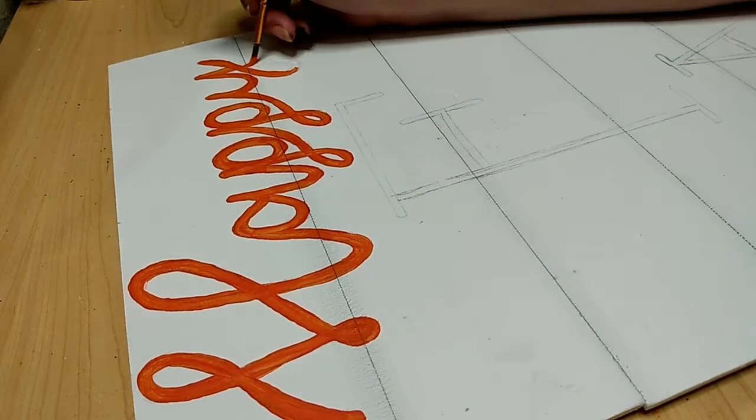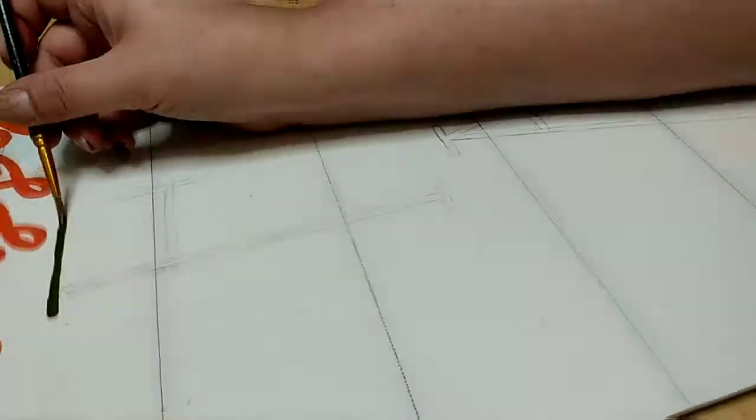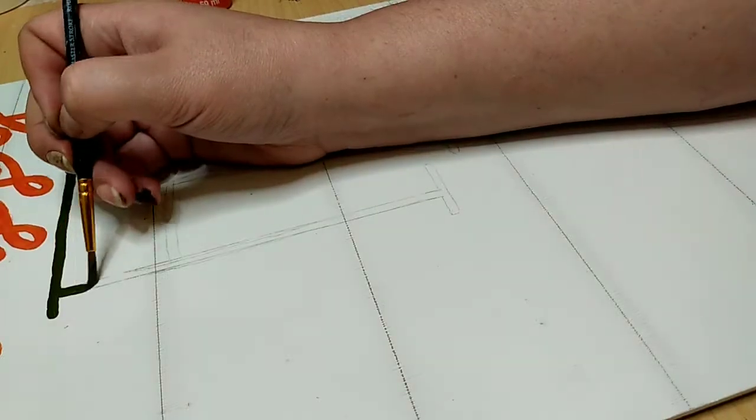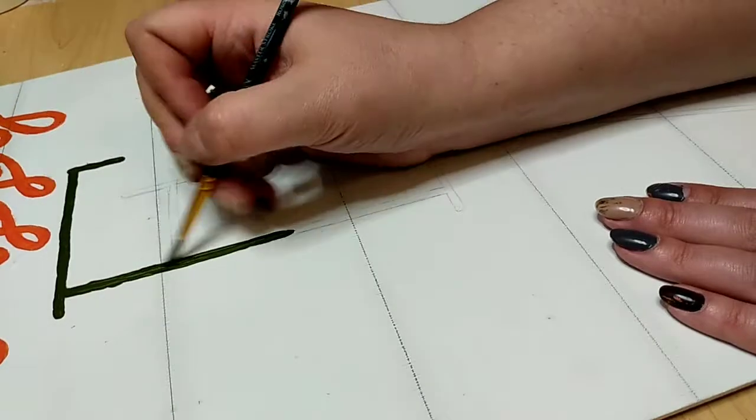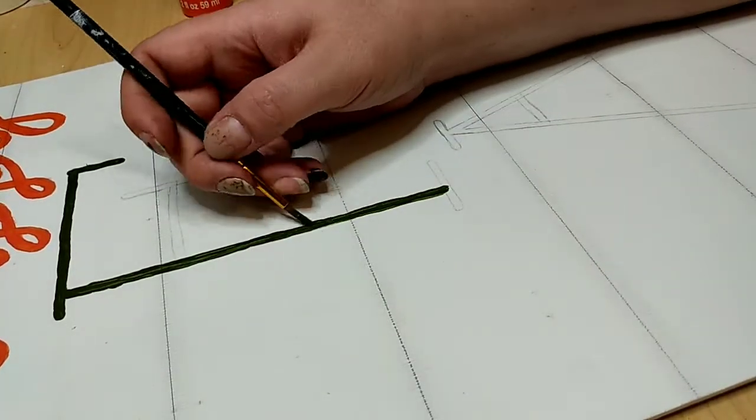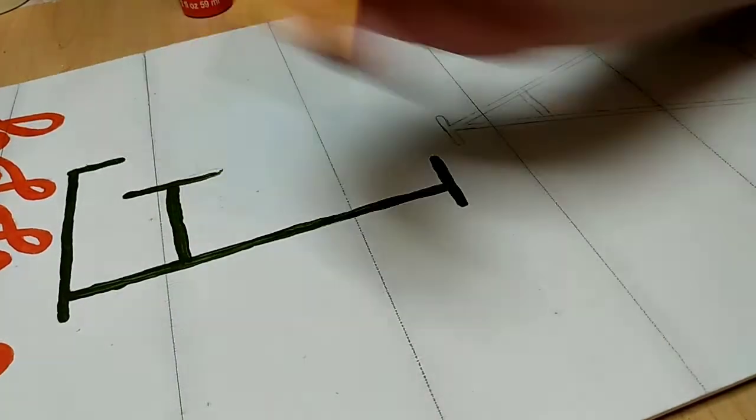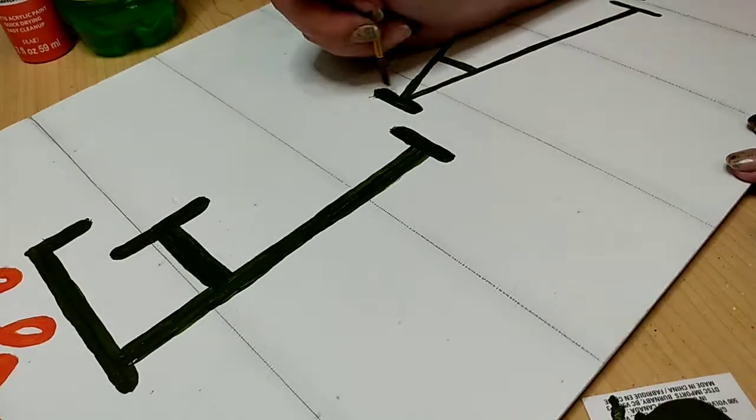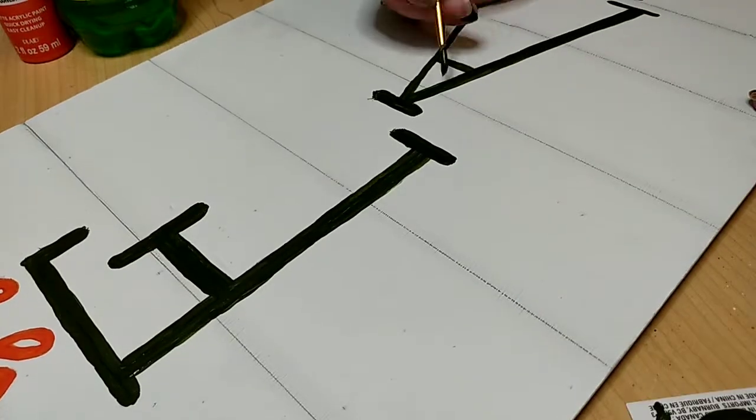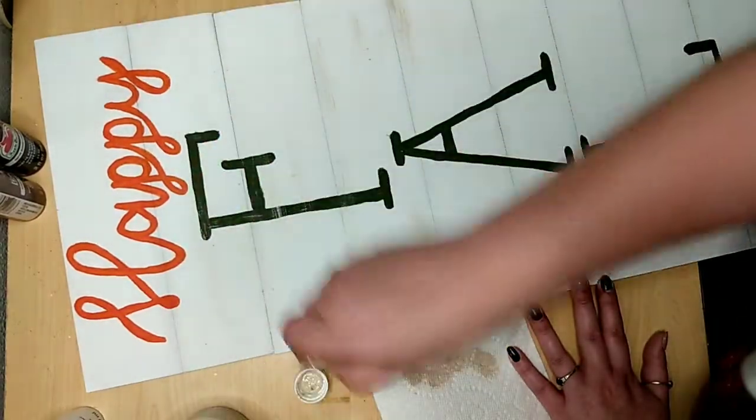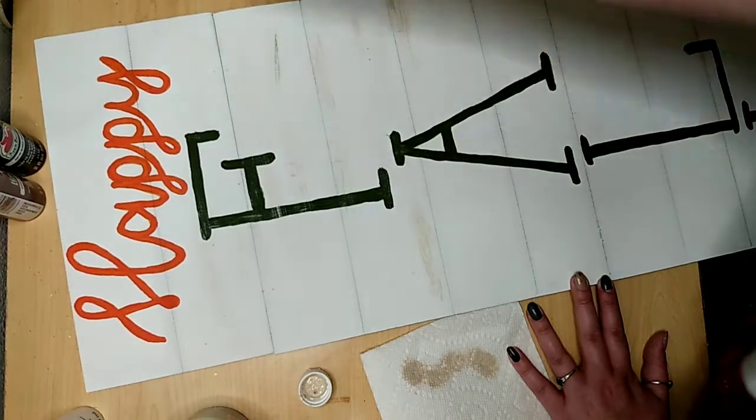Once you have Happy and Y'all painted you can let those dry and then move on to Fall. I used English ivy green for the word, the letters in Fall, and I was really just following exactly what I transferred on there, but it didn't quite look right so I thickened these up quite a lot and it looked so much better.